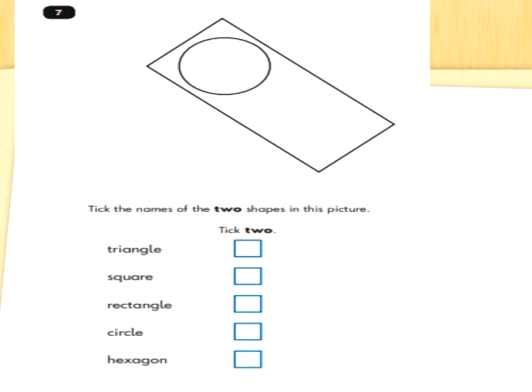Tick the names of the two shapes in this picture — tick two. Triangle, square, rectangle, circle, or hexagon. What two shapes can you see? We've got a rectangle — that's a long shape with two short sides and two long sides. And inside the rectangle there is a circle. Well done.